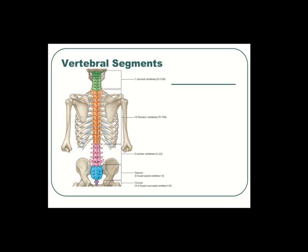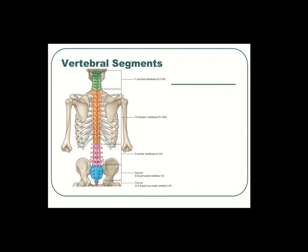How do you remember how many of each type of vertebra there are? Think about meals: for the cervical, think breakfast; for the thoracic, think lunch; and for the lumbar, think dinner. We have breakfast at 7, lunch at 12, dinner at 5. That tells us: 7 cervical vertebrae, 12 thoracic vertebrae, 5 lumbar vertebrae.